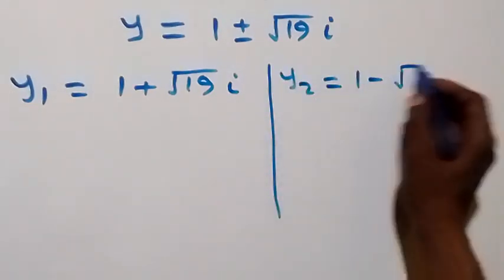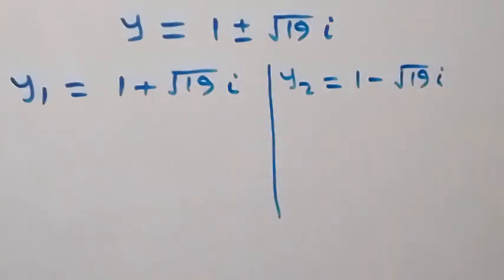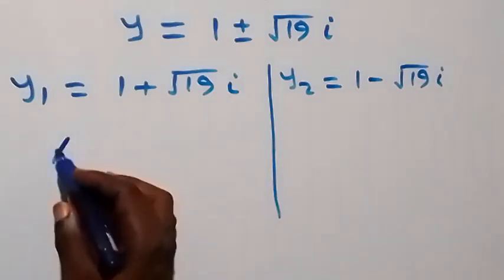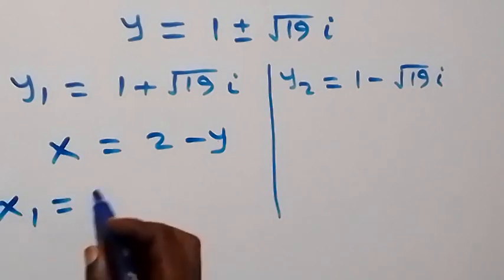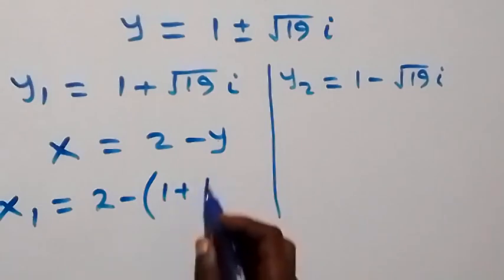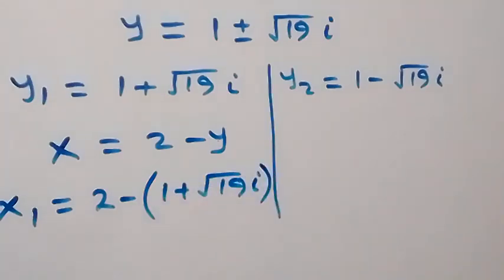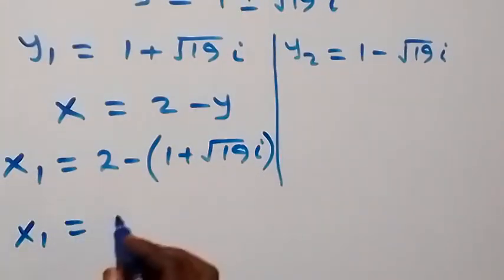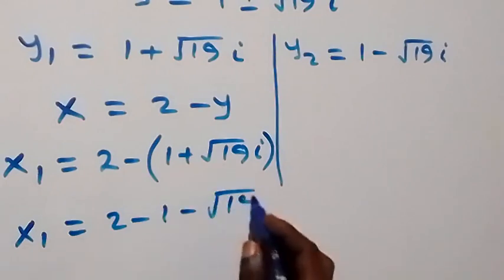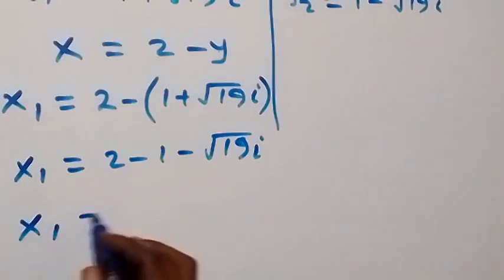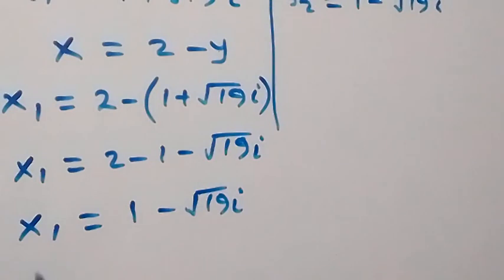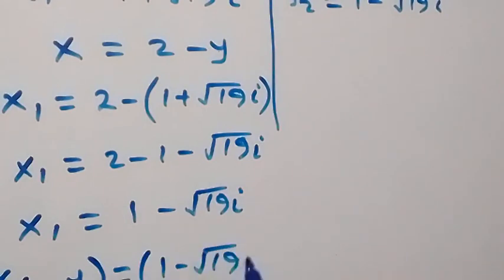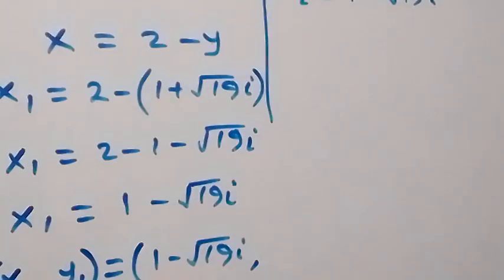From equation 3, x equals to 2 minus y. So x1 equals to 2 minus y1, which is 2 minus (1 plus root 19 i). Opening the bracket: x1 equals to 2 minus 1 minus root 19 i, which gives x1 equals to 1 minus root 19 i. The first solution set is (x1, y1) equals to (1 minus root 19 i, 1 plus root 19 i).